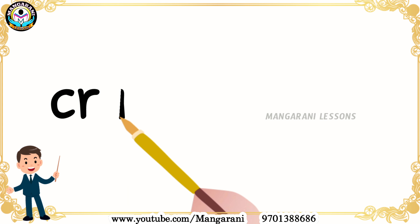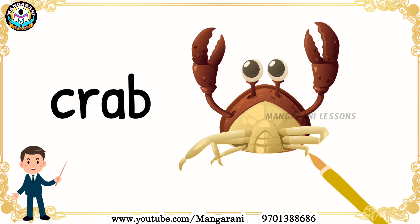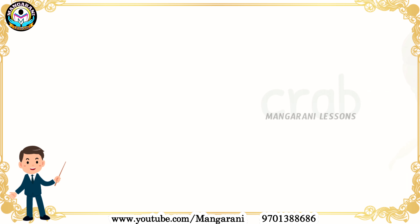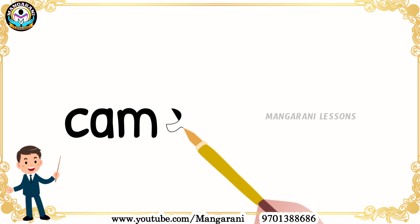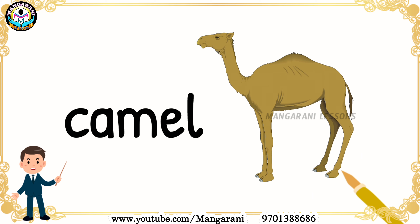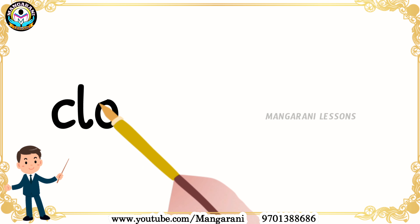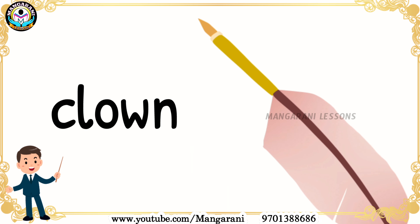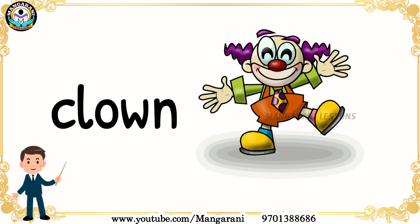C R A B — Crab. This is a crab. C A M E L — Camel. This is a camel. C L O W N — Clown. He is a clown.